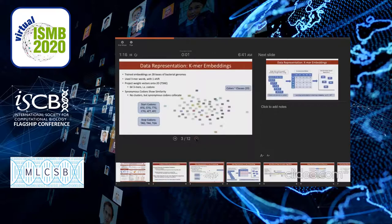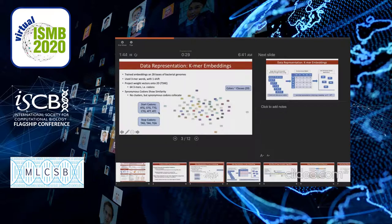Here we represent data representation using KMR embedding. Embeddings represent data as a vector of numbers. We use k-mers from the DNA sequences and consider the 64 codons representation. The interesting part is that if you look at the start codon clusters — ATG, GTG, TTG, CTG, and ATC — they are basically clustered all together.